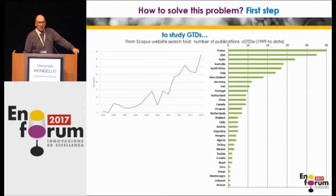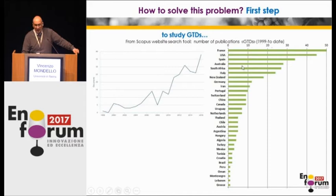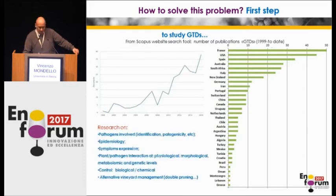The first step to solve the problem was investigating and studying the diseases. There has been a major increase in publications about GTDs in the past years, and many countries produced this work — France, but also Croatia, Peru, and Oman. So it is a widespread problem.